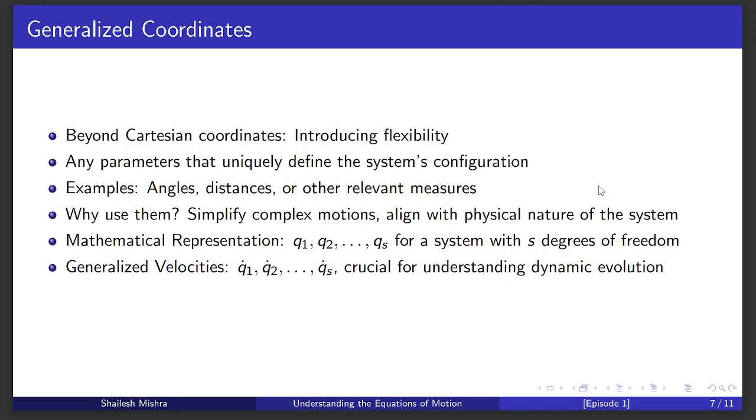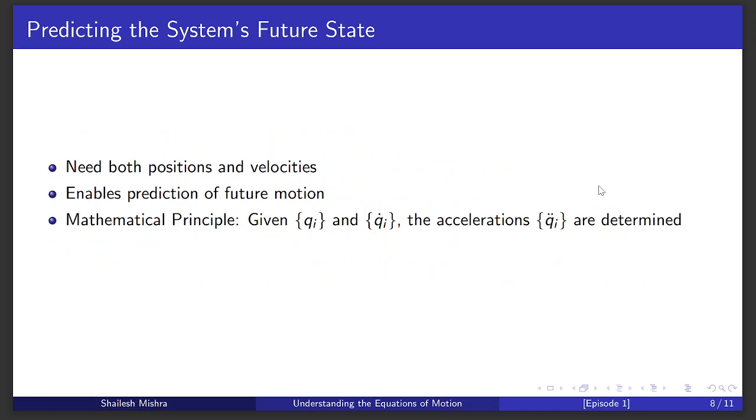Furthermore, the rates at which these generalized coordinates change, called generalized velocities, are key to understanding motion. They provide a direct insight into how the system evolves over time. By using generalized coordinates and velocities, we can formulate the equations of motion in a way that is often much more manageable and aligned with the physical nature of the problem. Knowing where everything is and how fast it's moving lets us predict what will happen next in the system. That's the power of knowing both positions and velocities.